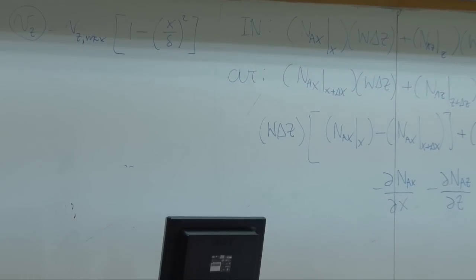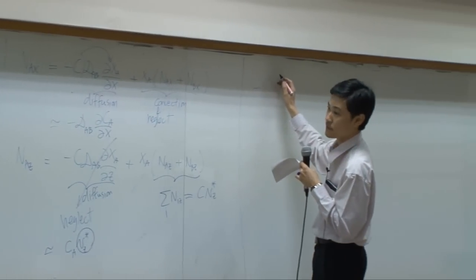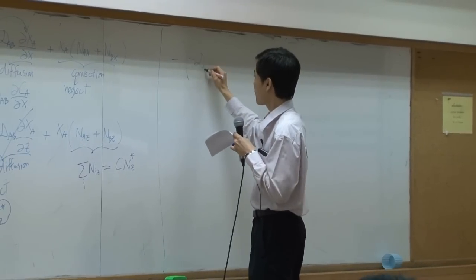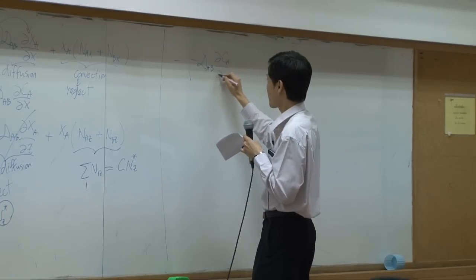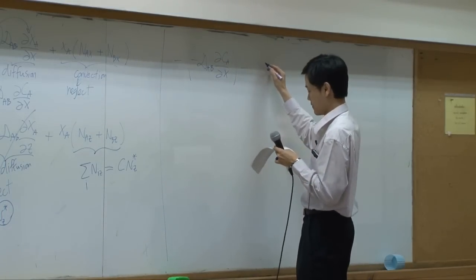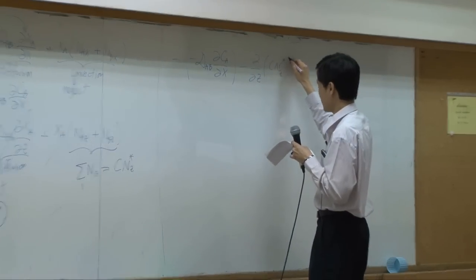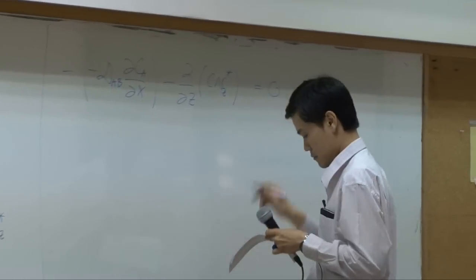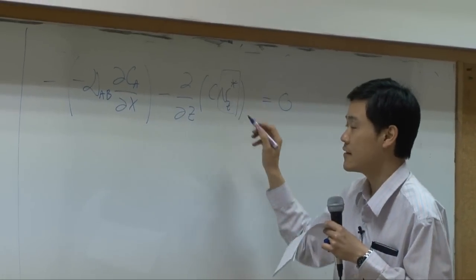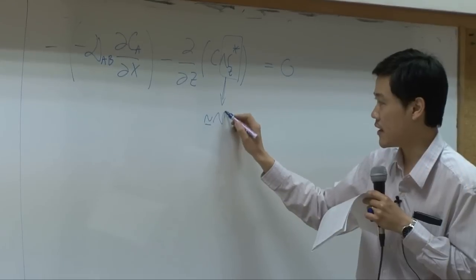So I'm going to bring that to the shell balance. As I said, this V*C can be approximated to be Vz.